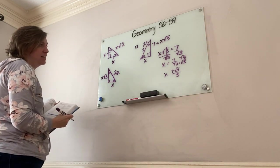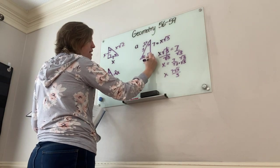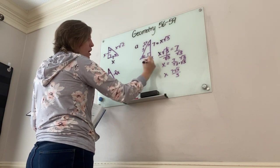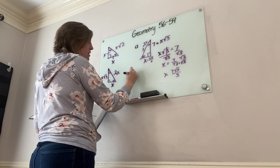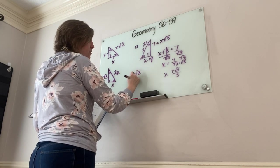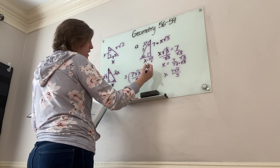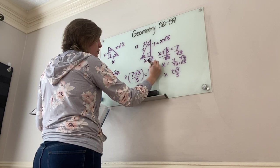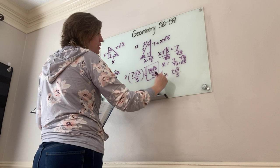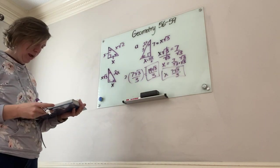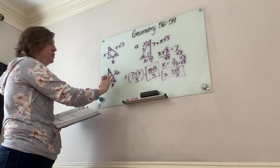So x = 7√3/3, meaning opposite the 30 equals 7√3/3. What would y be? Well, y is simply double that: 7√3/3 × 2 = 14√3/3. So 14√3/3 equals y. I solved it and got my two answers — that's all they're asking for using this ratio.